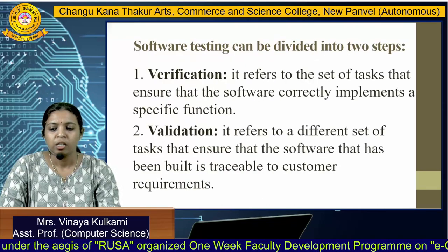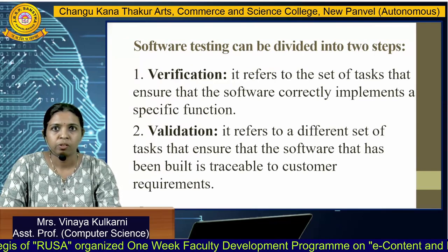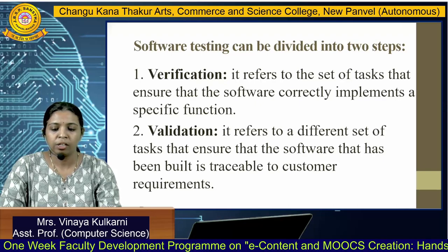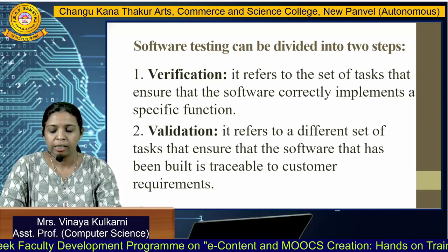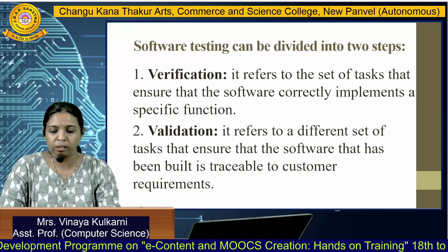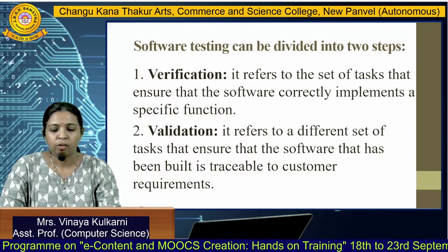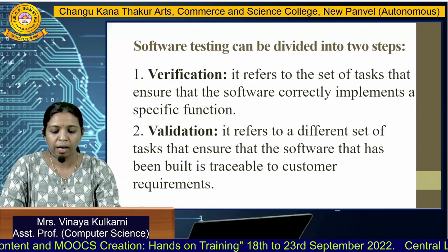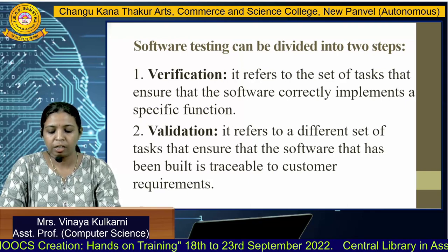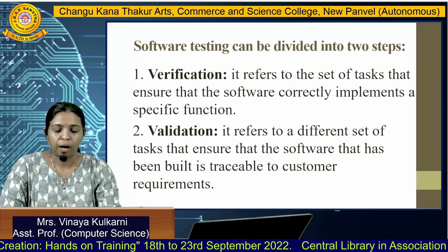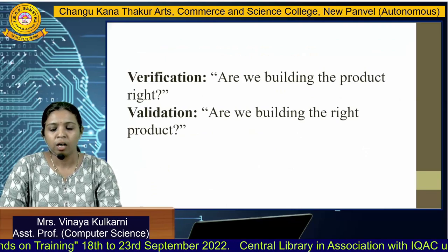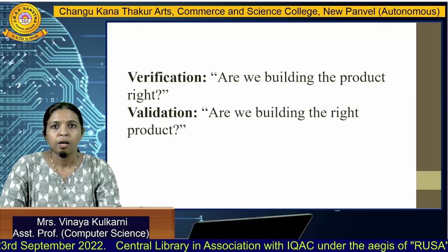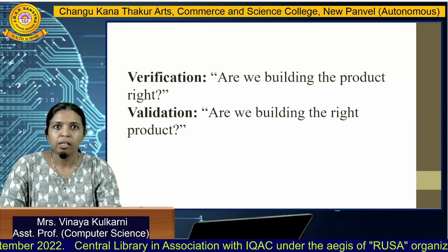Software testing can be divided into two steps: first, verification, and second, validation. Verification refers to the set of tasks that ensure the software correctly implements a specific function. Validation refers to a different set of tasks that ensure the software that has been built is traceable to customer requirements. Verification also means are we building the product right, and validation means are we building the right product.